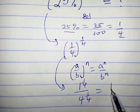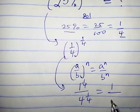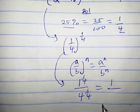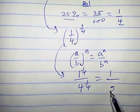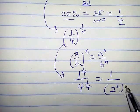1 raised power 1 over 4, that is just 1, because 1 raised power n is 1, even 1 raised power 0 is 1. Now, 4 raised power 1 over 4, we can write 4 as 2 squared.